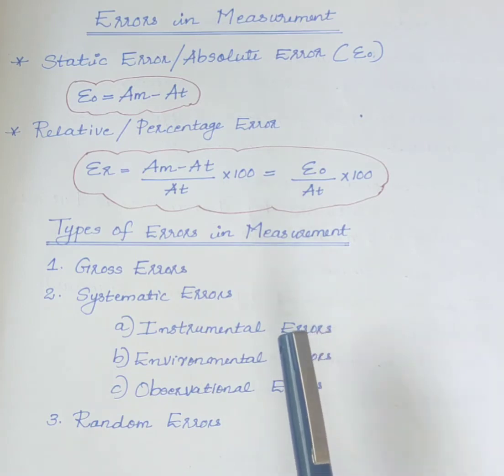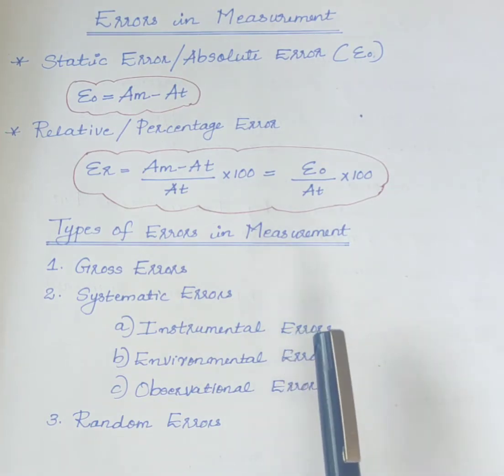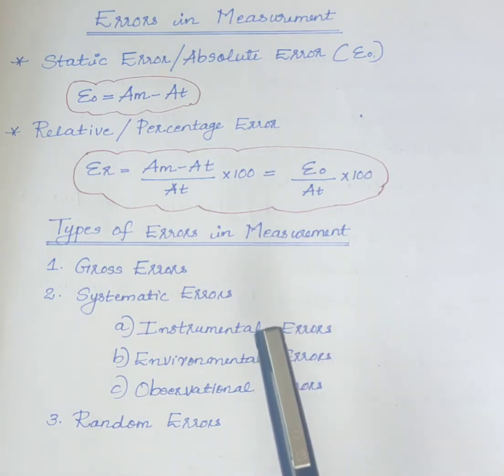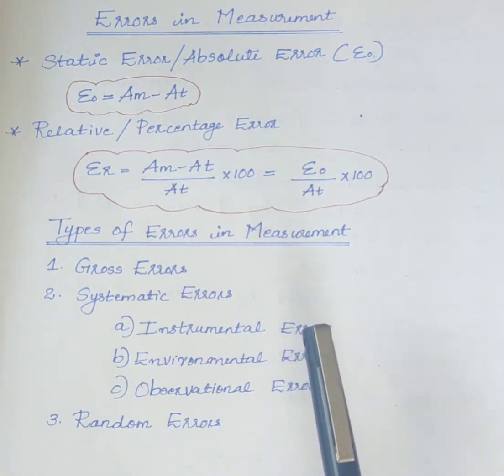Some of the reasons are improper use of measuring instrument, for example, using 0 to 100 volt range voltmeter to measure 0.01 volt. Incorrect adjustment of instruments, for example, 0 and full scale adjustment of instruments.